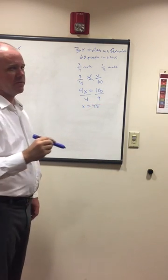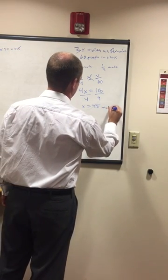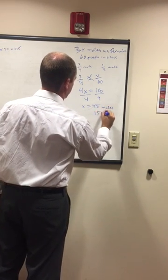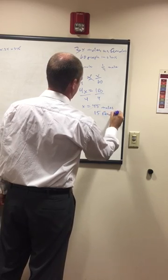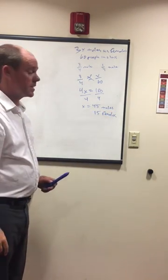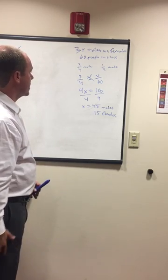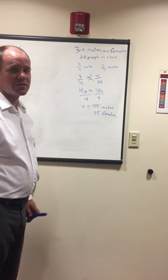So that's 45 males, and then we'd be left with 15 females. Quick fact check: 45 plus 15 is 60, so that number looks good. 15 times 3 is 45, that looks good as well. That's the right answer.